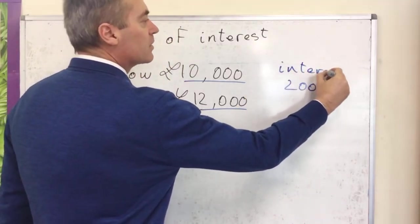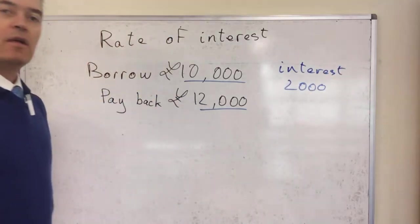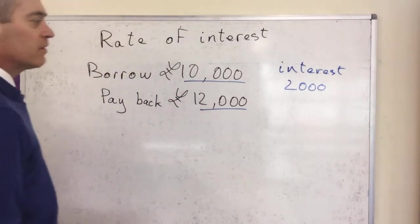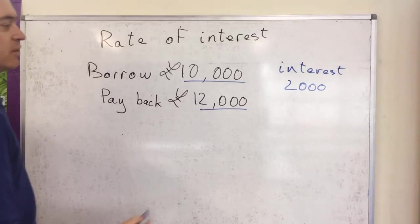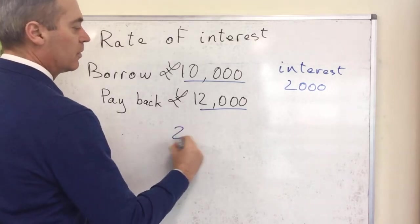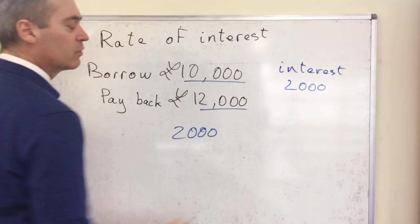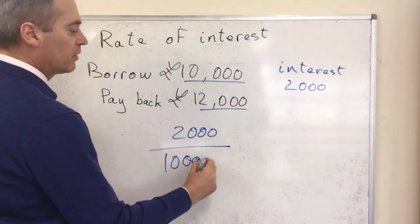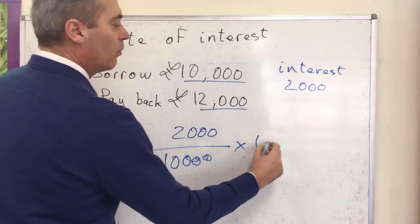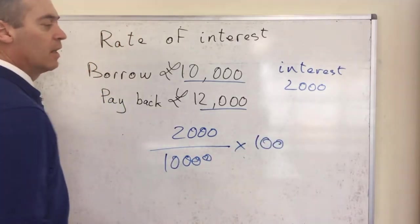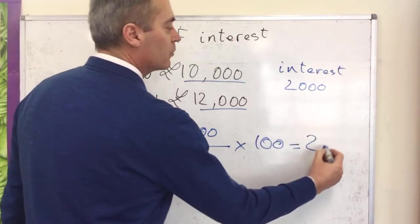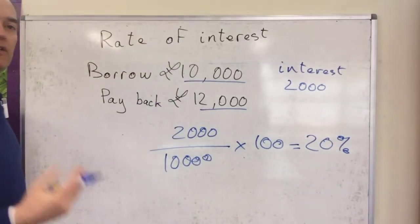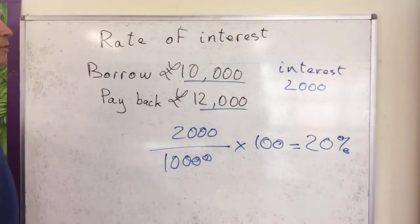You could be asked to calculate as a percentage the rate of interest. So the rate of interest: you would take the difference, which is £2,000, divide it by the starting value of £10,000, times by 100, and you end up with 20%. That's one kind of question you could be asked.